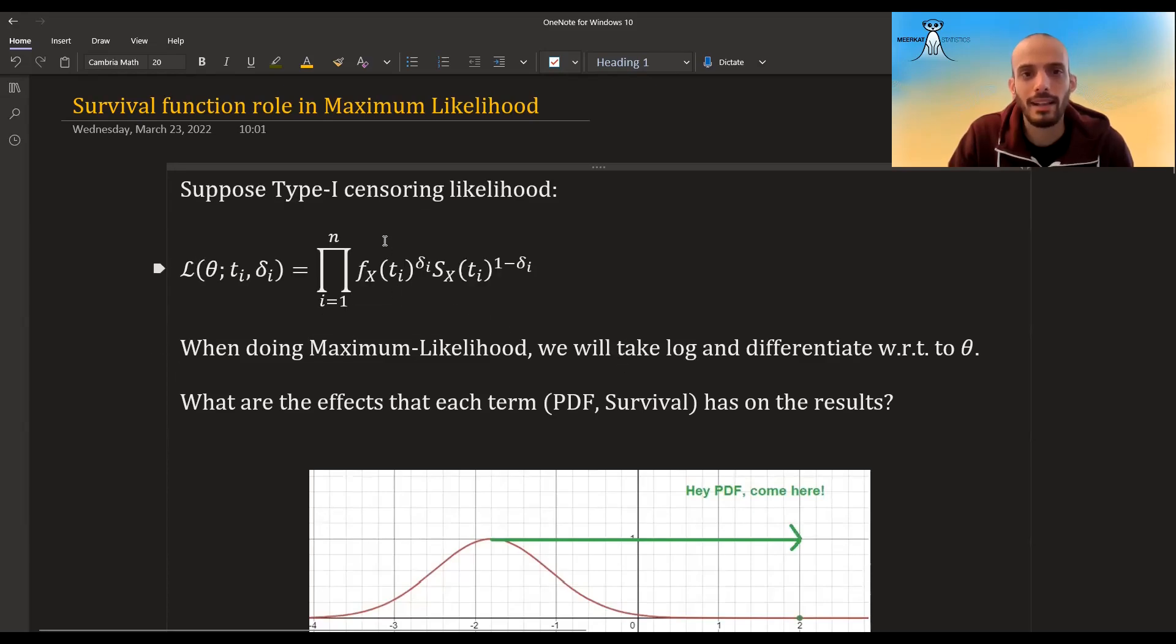So remember, we wrote that the Type 1 censoring likelihood looks like this. When doing maximum likelihood, we will take the log of this, differentiate with regards to the parameter, and equate to zero, or maybe do Newton-Raphson, or gradient descent, or whatever.